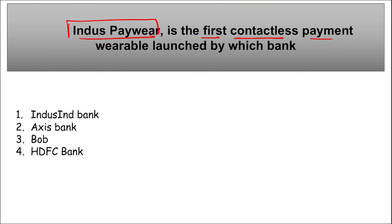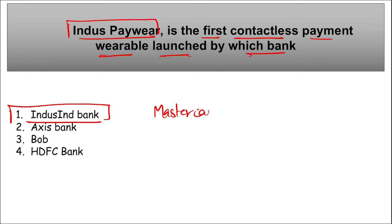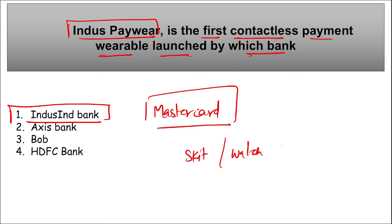IndusInd Bank launched Indus PayWear — the first contactless payment wearable — on Mastercard for both credit and debit cards. It currently comes in three variants: a sticker, a watch, and a ring, and uses NFC-enabled secure element technology for tap-and-pay transactions.